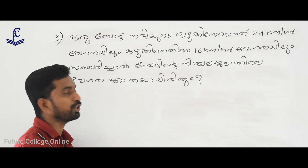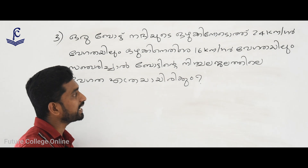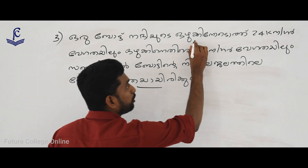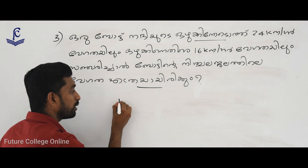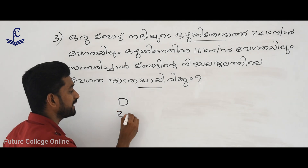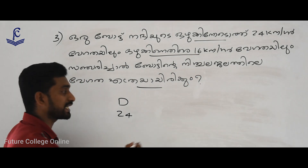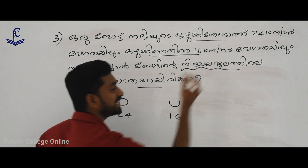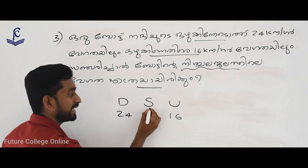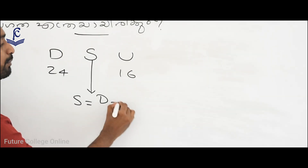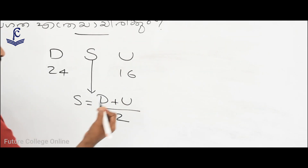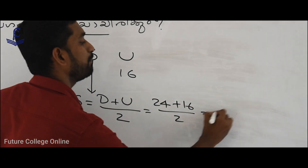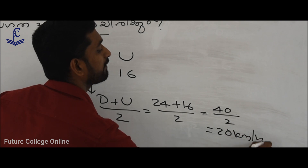Let's see what the boat has. The downstream speed D is 24 km per hour, and the upstream speed U is 14 km per hour. Still water speed S is equal to D plus U divided by 2: 24 plus 14 divided by 2 equals 20 km per hour.